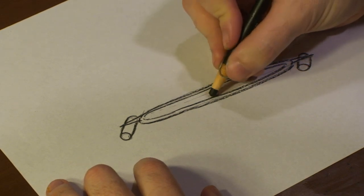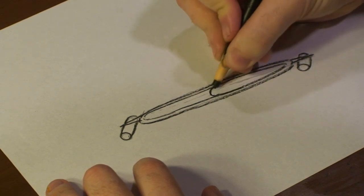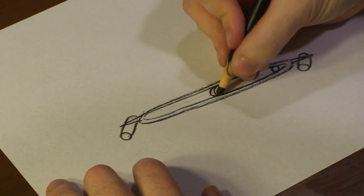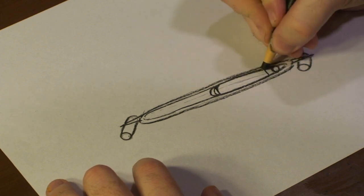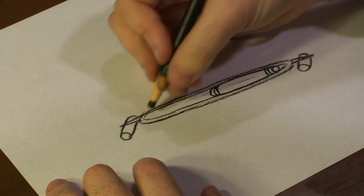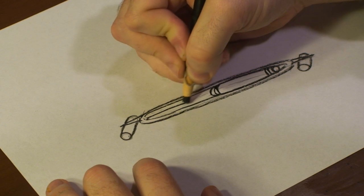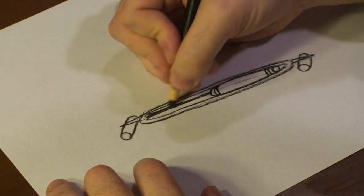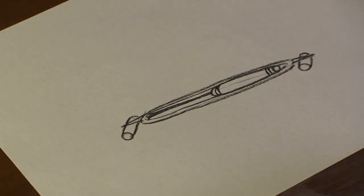And once we have that, we're going to draw our inner circuit. Draw a connector right here, and that's our reed switch.